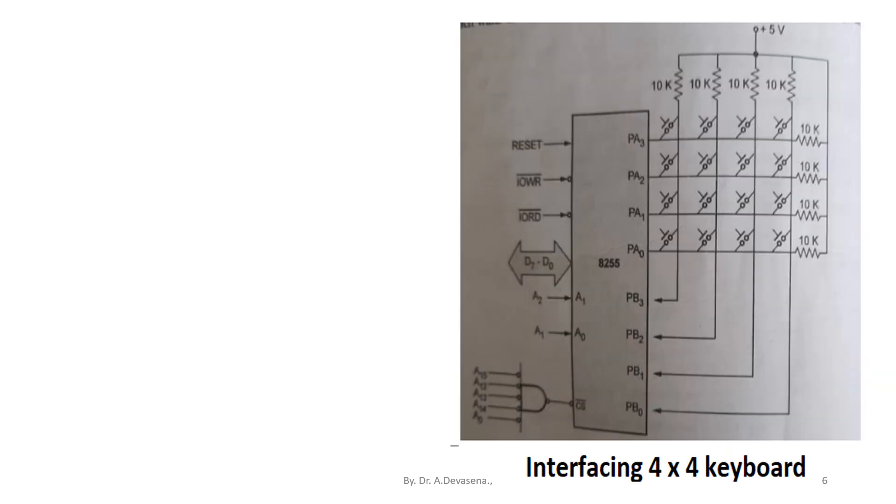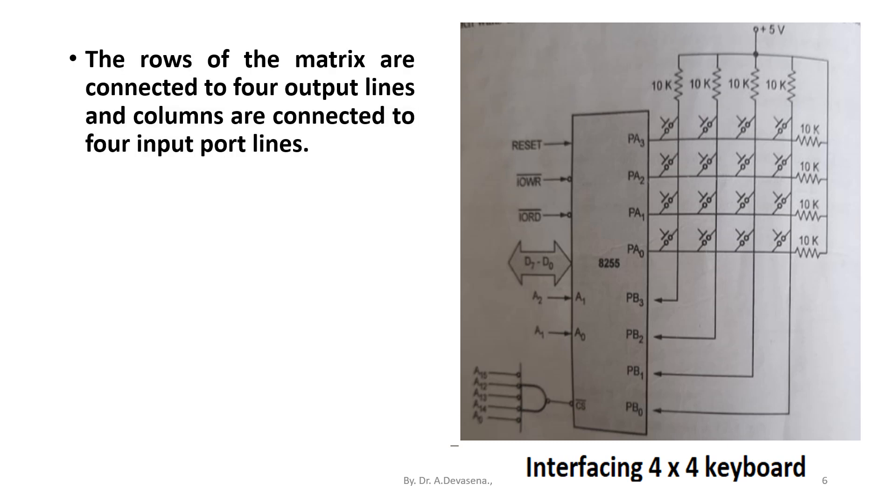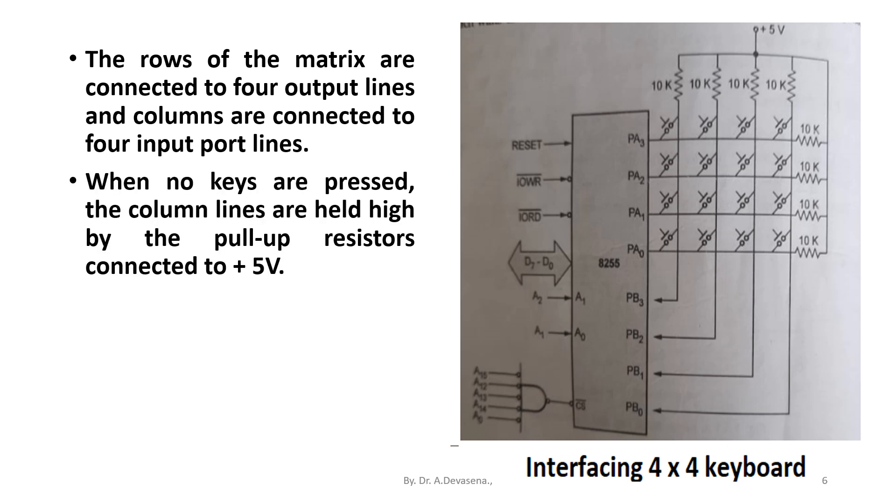The rows of the matrix are connected to four output ports and columns are connected to four input port lines as shown in this diagram. When no keys are pressed, the column lines are held high by the pull-up resistor connected to plus 5 volts. Pressing a key connects a row and a column.